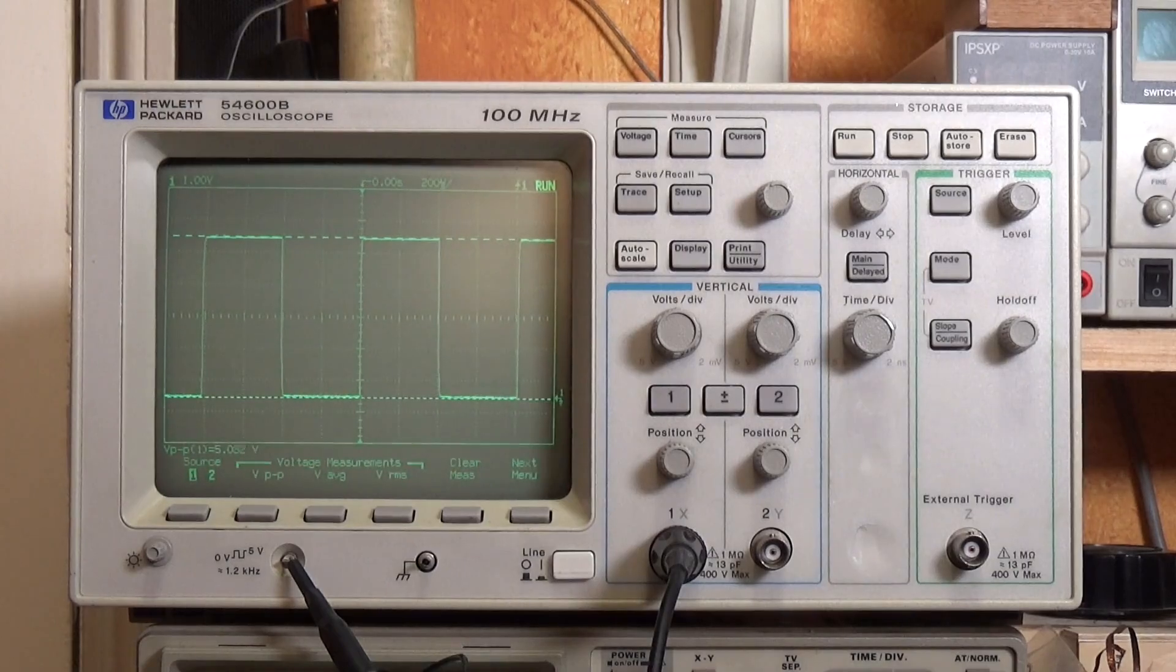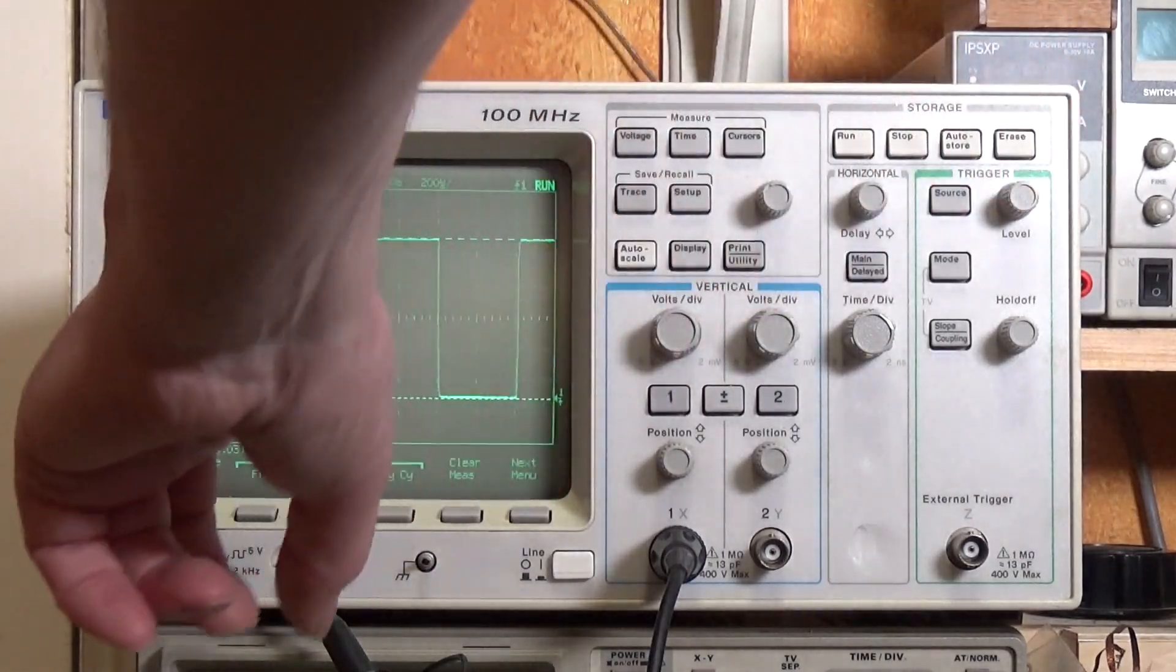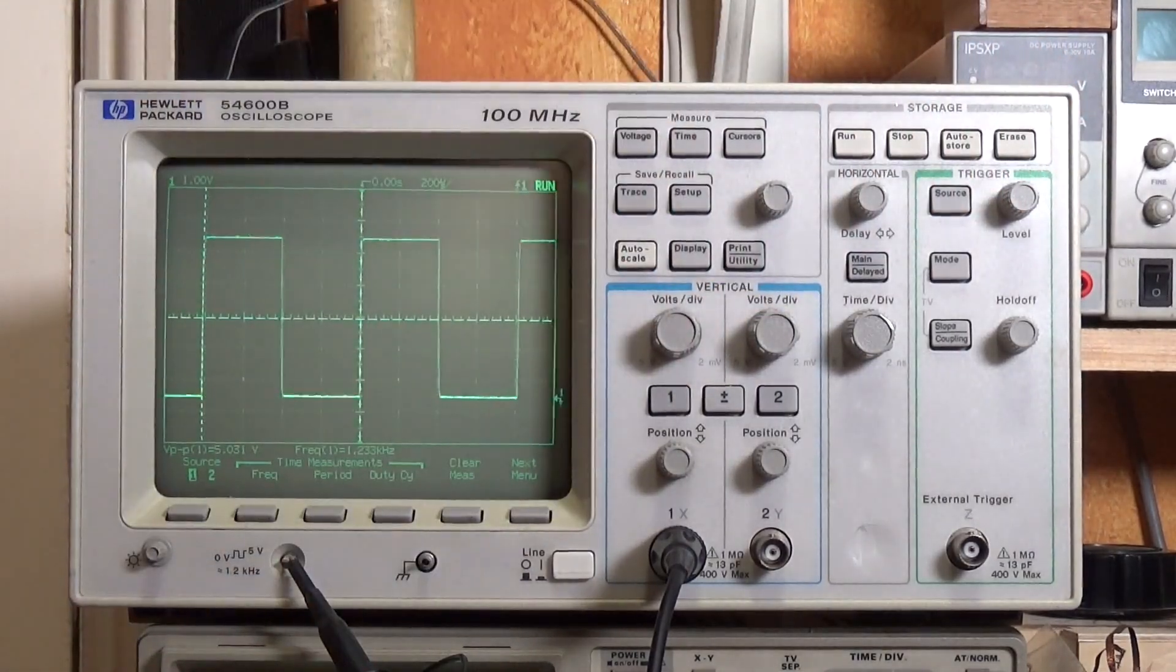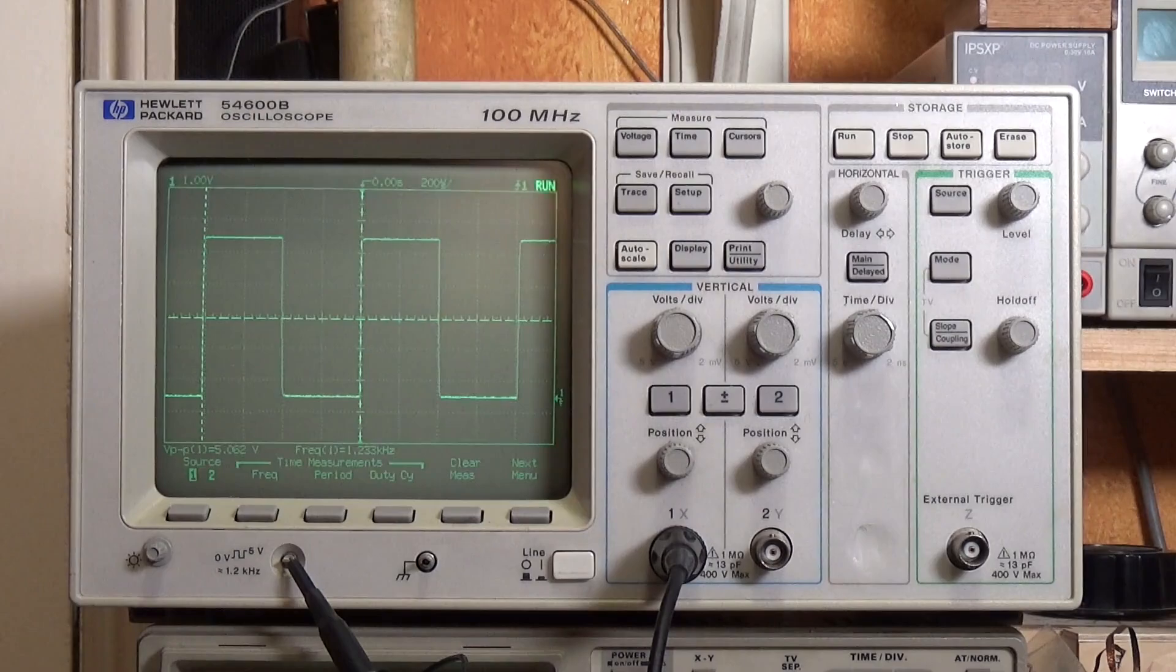We can also press the time button and I can select frequency, and it's telling us that it's 1.232 kilohertz and it should be 1.2 kilohertz, so again spot on—very useful functionality.